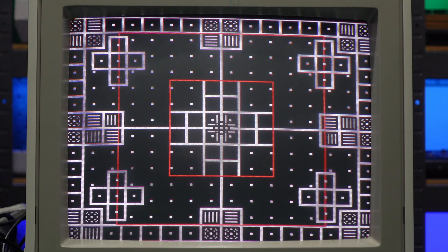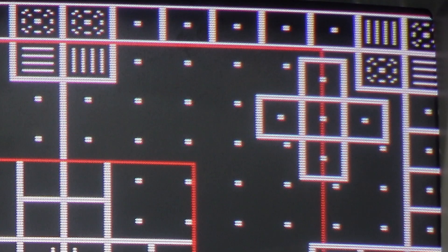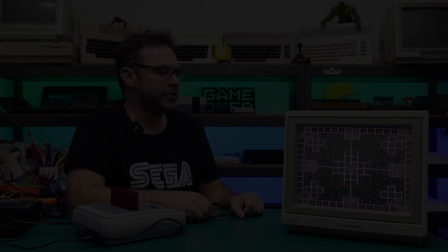So now that the RGB SCART mod is complete and fully working the only thing I want to do now is just align the yoke a little bit and also deal with a little bit of misconvergence here and there.